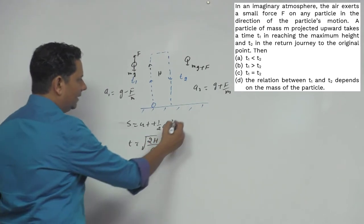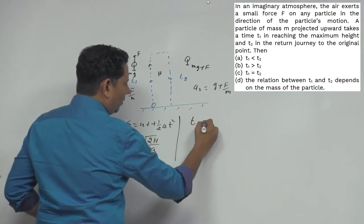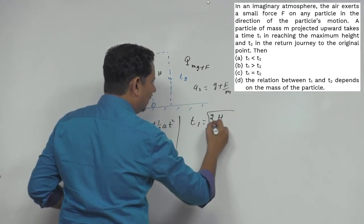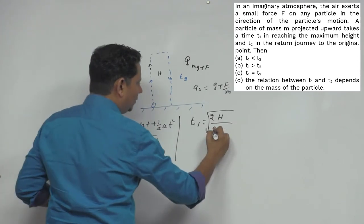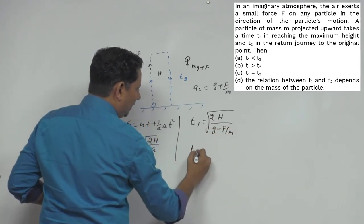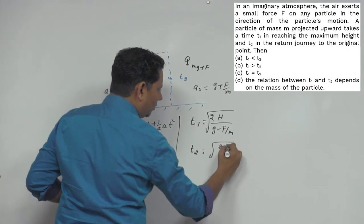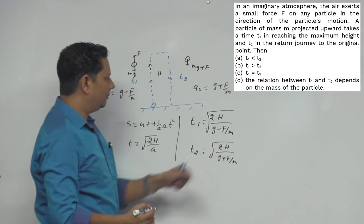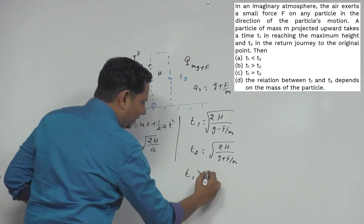So to compare these times, T1 will be equal to square root of 2h divided by (g minus F/m). And in the second case, T2 will be square root of 2h divided by (g plus F/m). Looking at this, we can say T1 will be greater than T2.